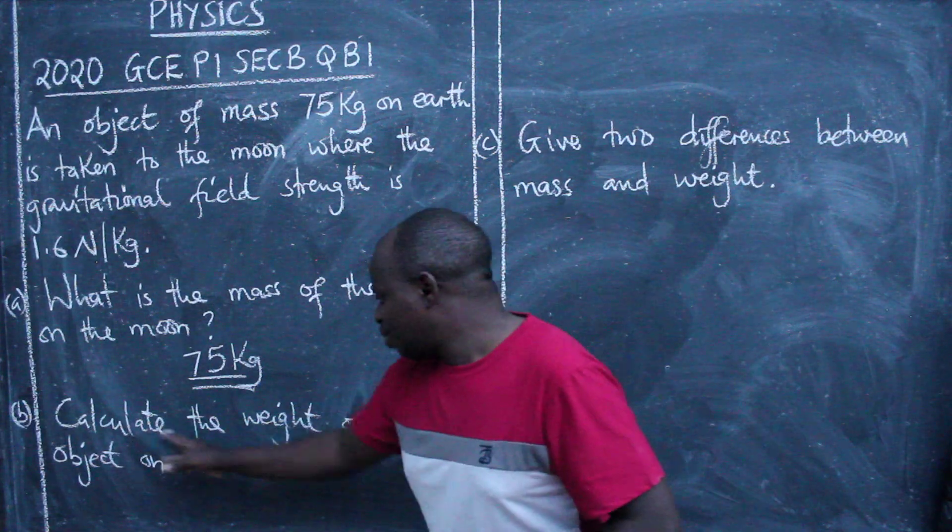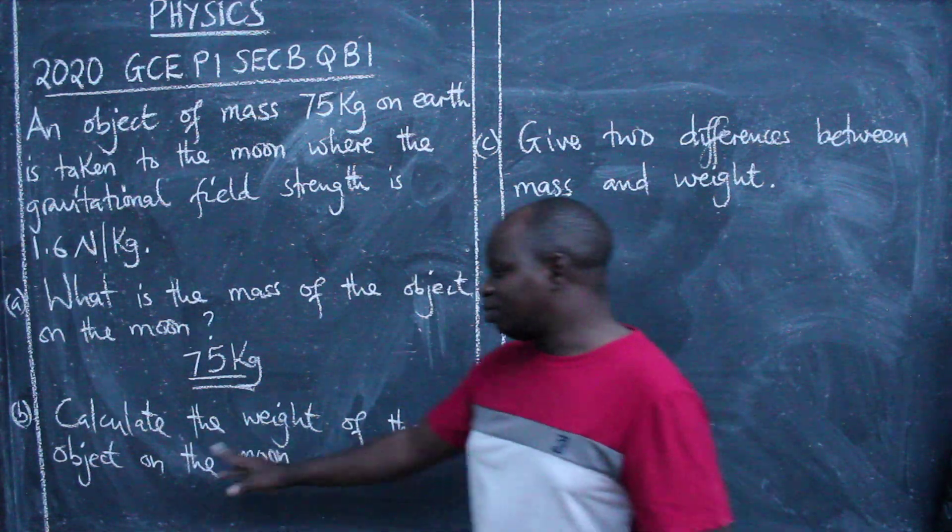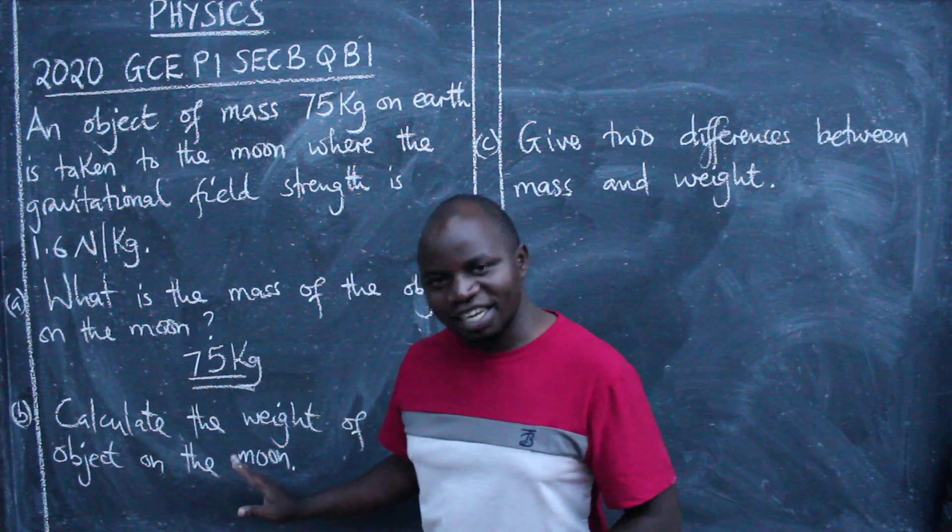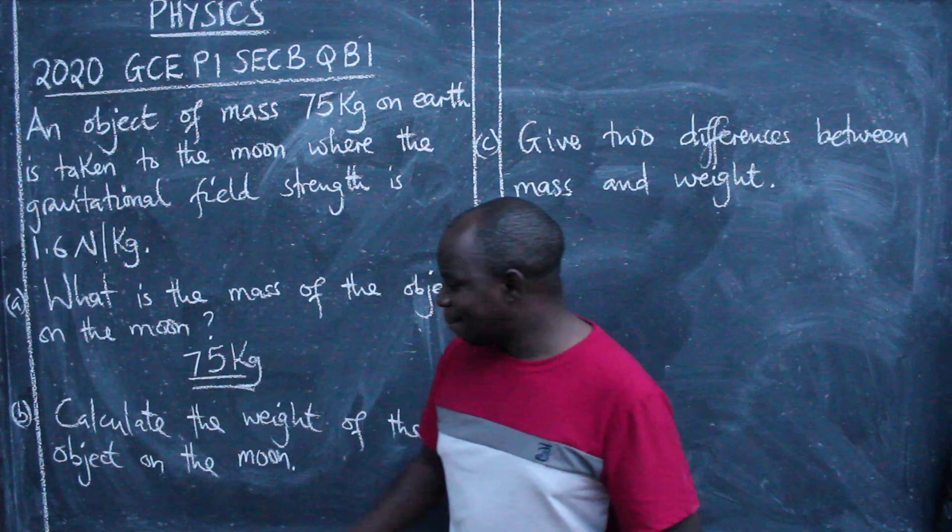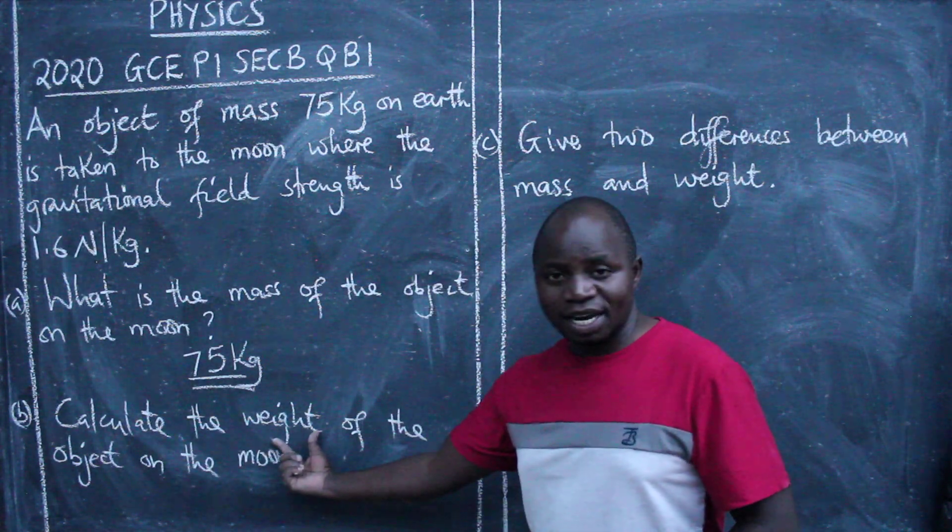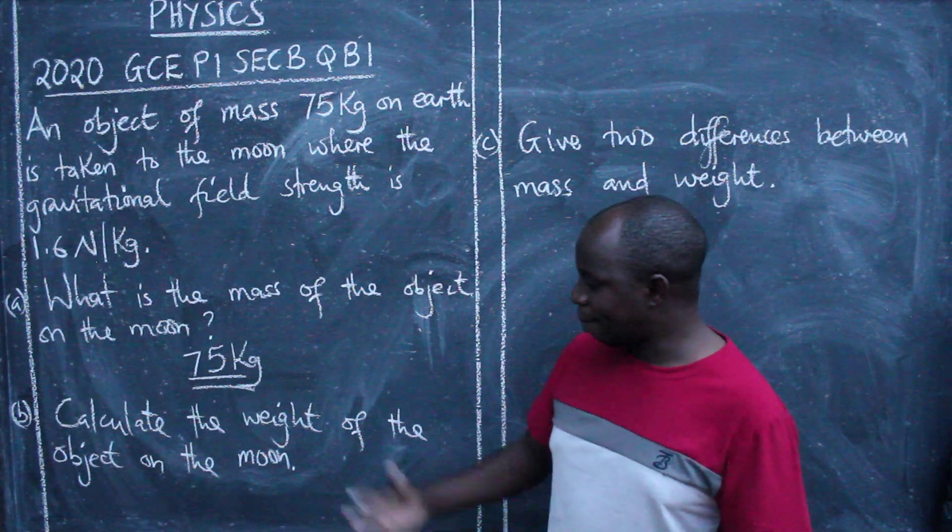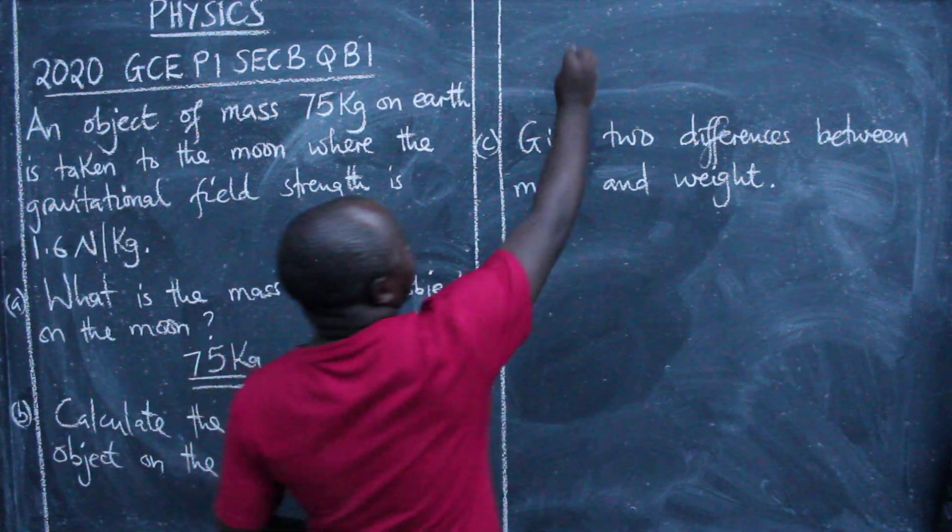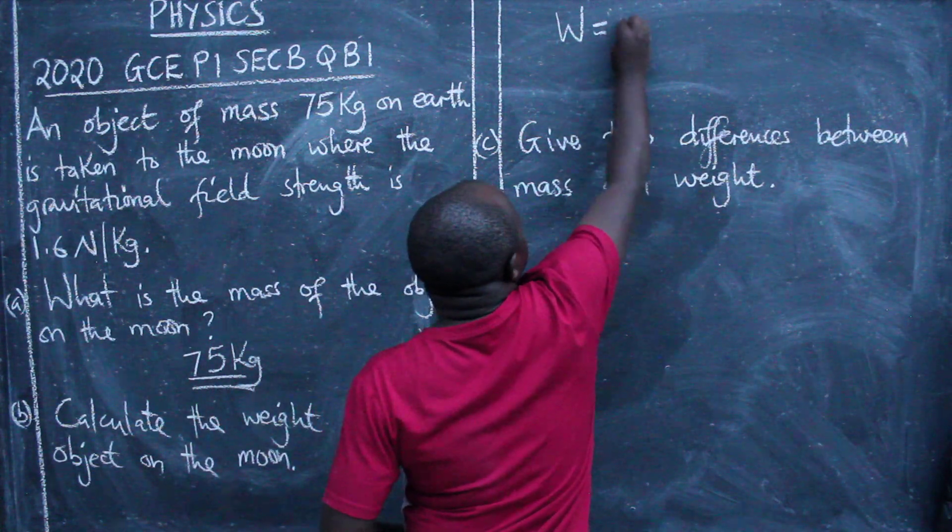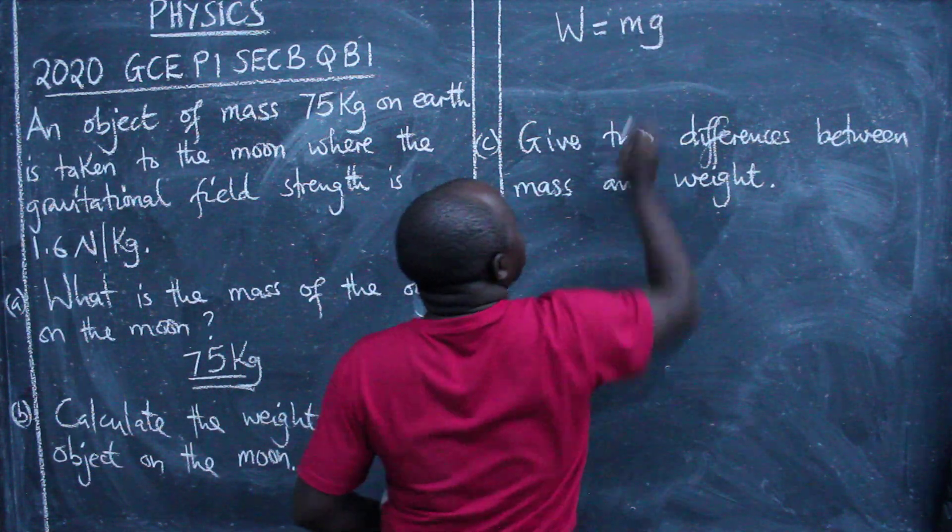Calculate the weight of the object on the moon. Now this one will be able to change. To get the weight of the object, we are going to use the formula which is weight equals mass multiplied by gravity, gravitational field strength.